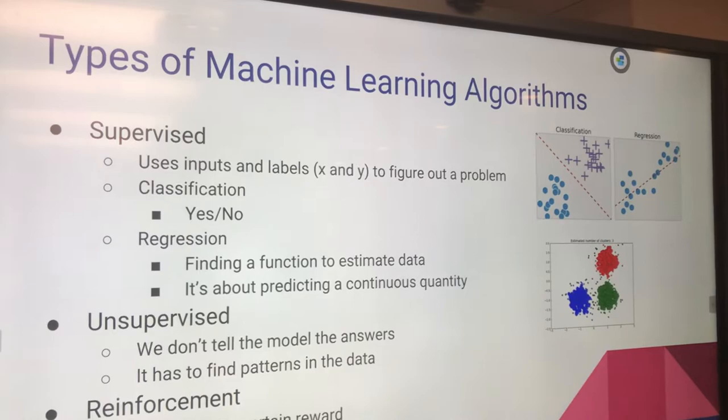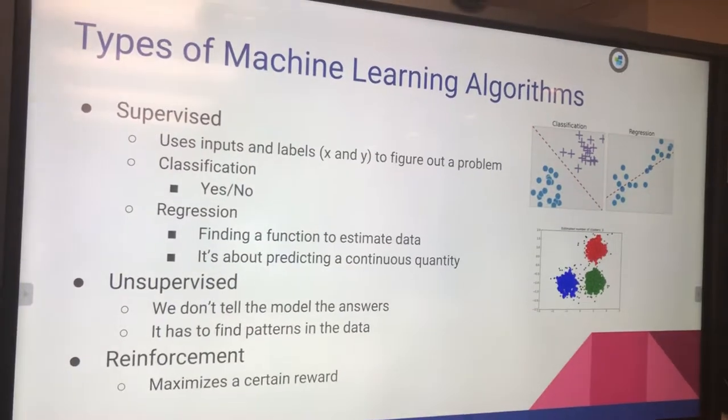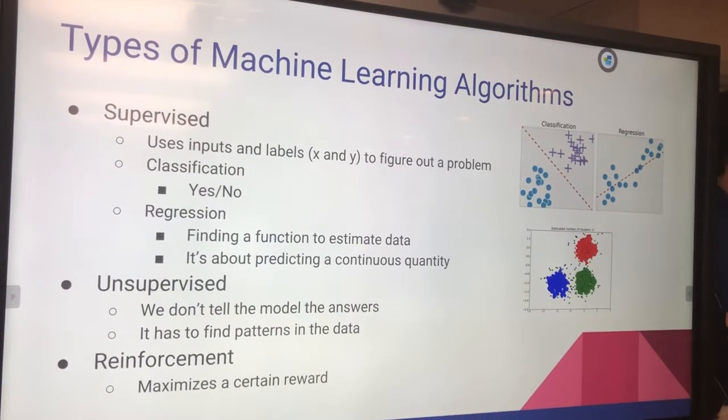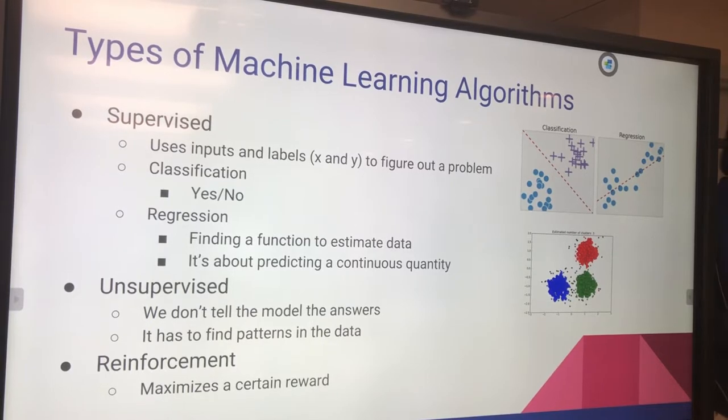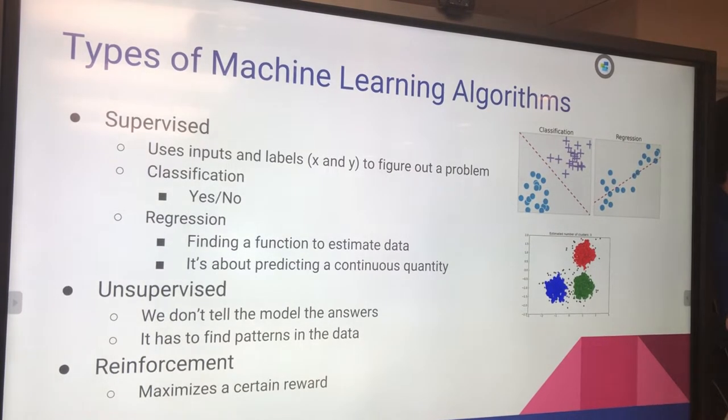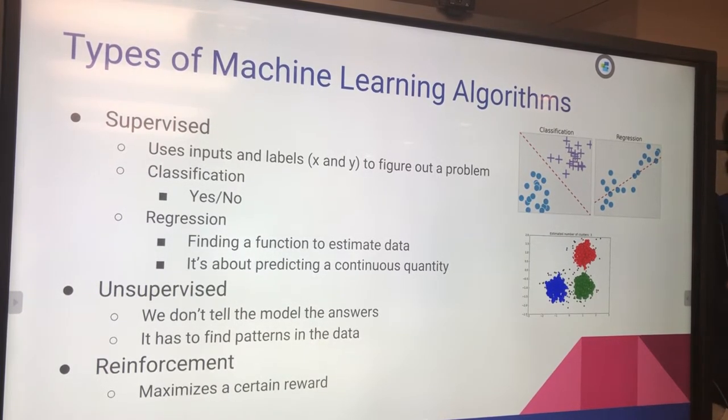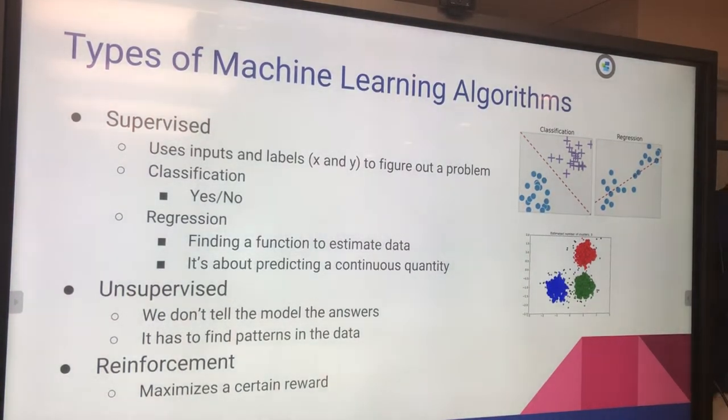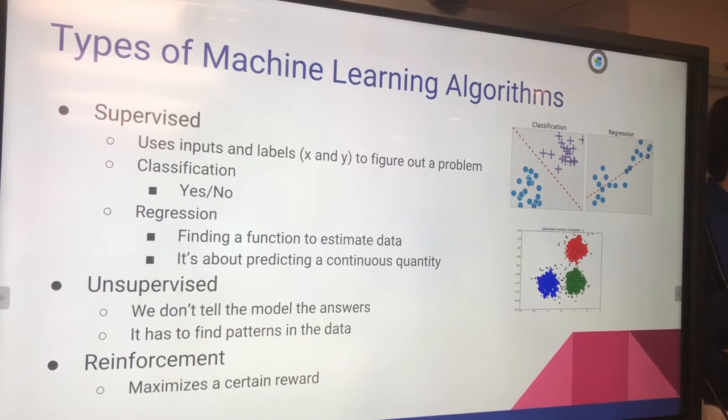So types of machine learning algorithms. This is by far the heaviest slide in my presentation. Essentially, you have these three types of machine learning algorithms in the real world: supervised, unsupervised, and reinforcement. You can fit pretty much any idea that you can think of in one of those three. Supervised uses inputs and labels, which you can think of as X and Y data points, to figure out a problem. That's classification, right? It's either yes or no. It's pretty simple.